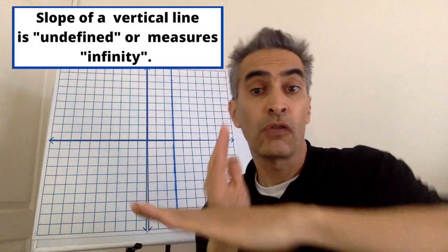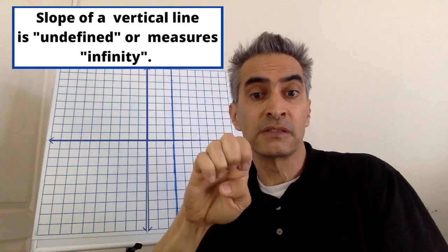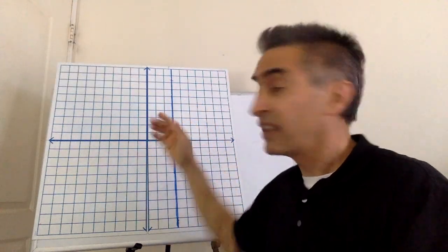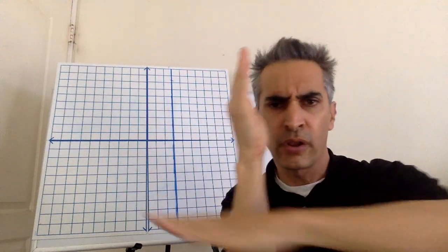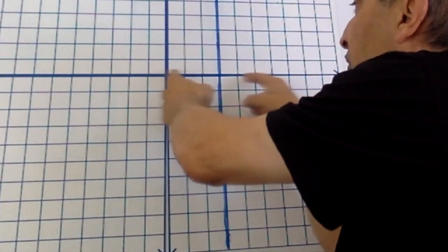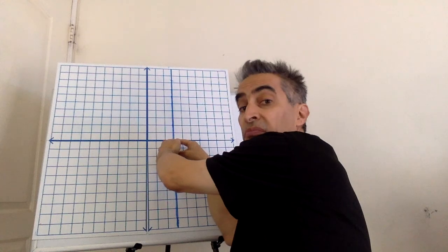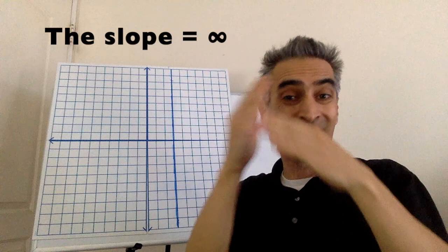Math teachers tend to call a vertical slope undefined or infinity, because for example with this vertical line, what is the measure of the horizontal? It's zero. This vertical line cannot divide by zero.